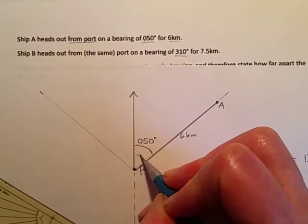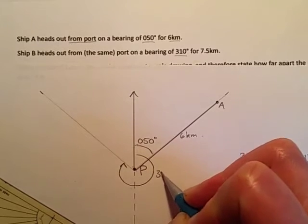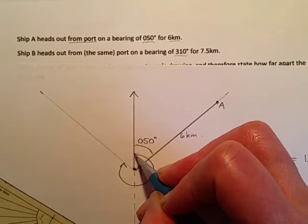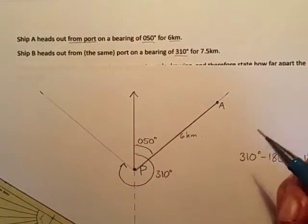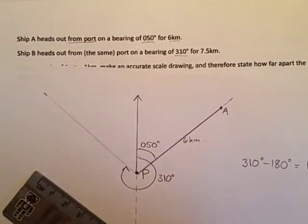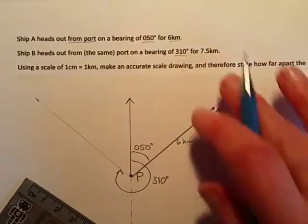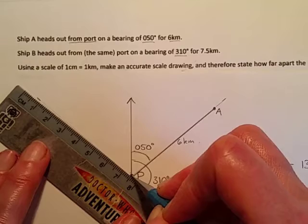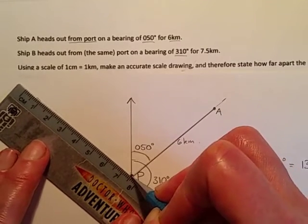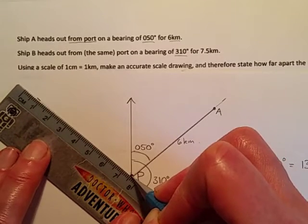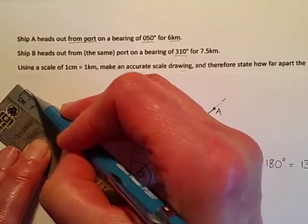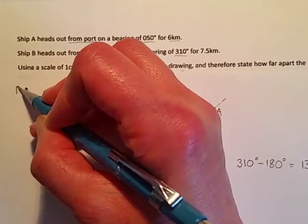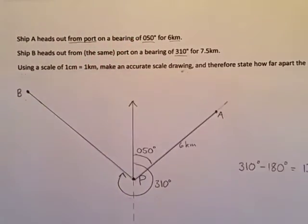That is a bearing of 310 degrees from port. So we measure it from this north line for 310 degrees. And then the distance for that one is seven and a half kilometres. So we're going to measure seven and a half centimetres because that's the scale we're using from port along that line, which will take us up to there.